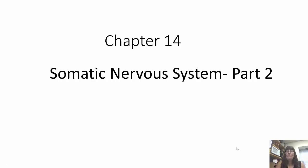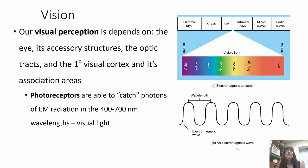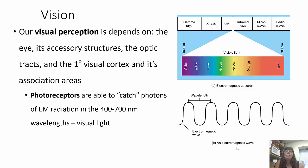Today we're going to finish chapter 14, which is basically talking about vision. Our visual perception depends on a few different things — not only the obvious eye, but all of the accessory structures, the optic tracks, the primary visual cortex, and all of its association areas in our brain. We have photoreceptors in our eyes that can catch photons, but only within the visible light spectrum.